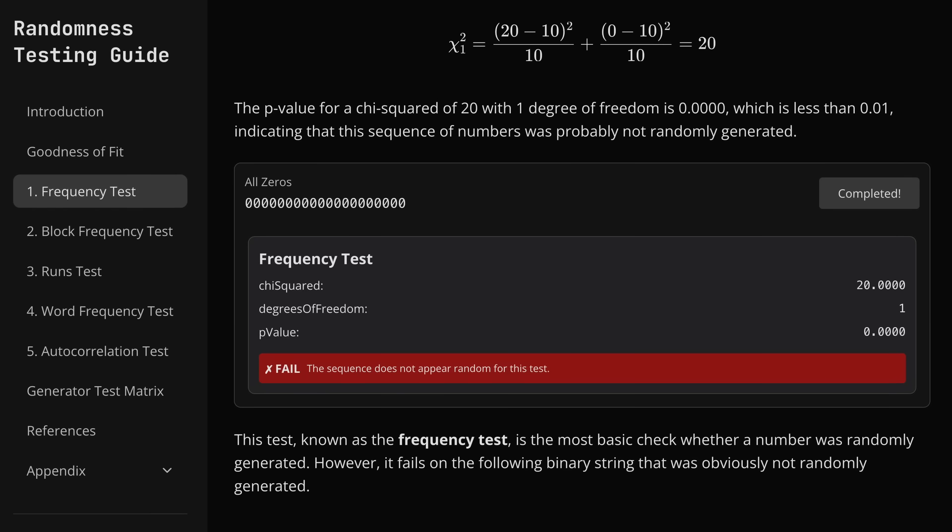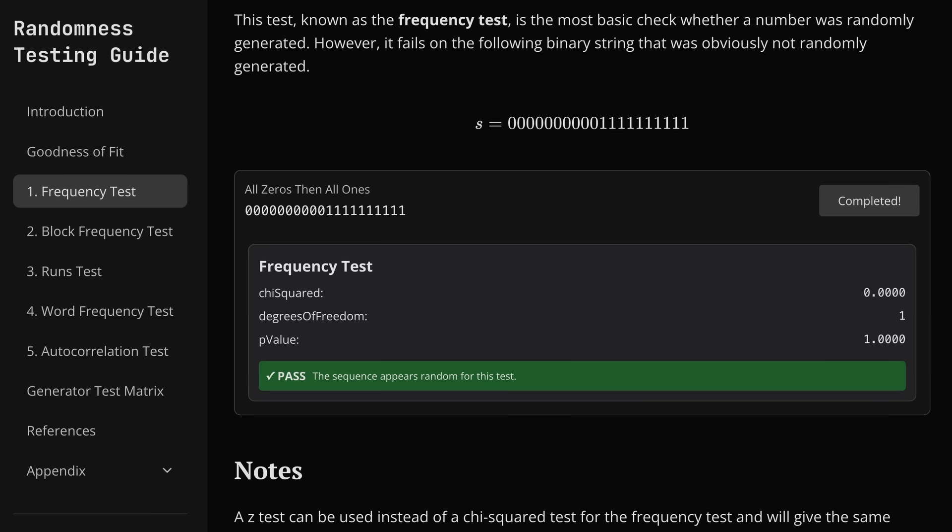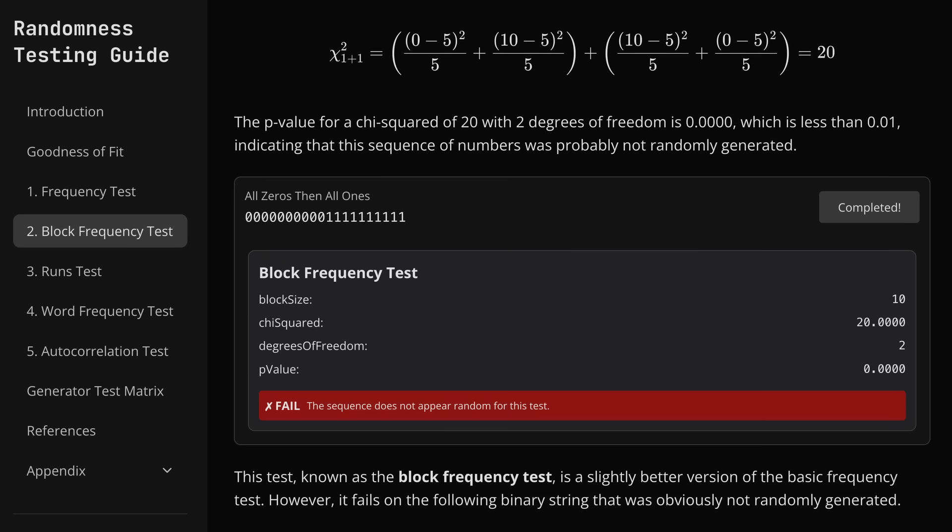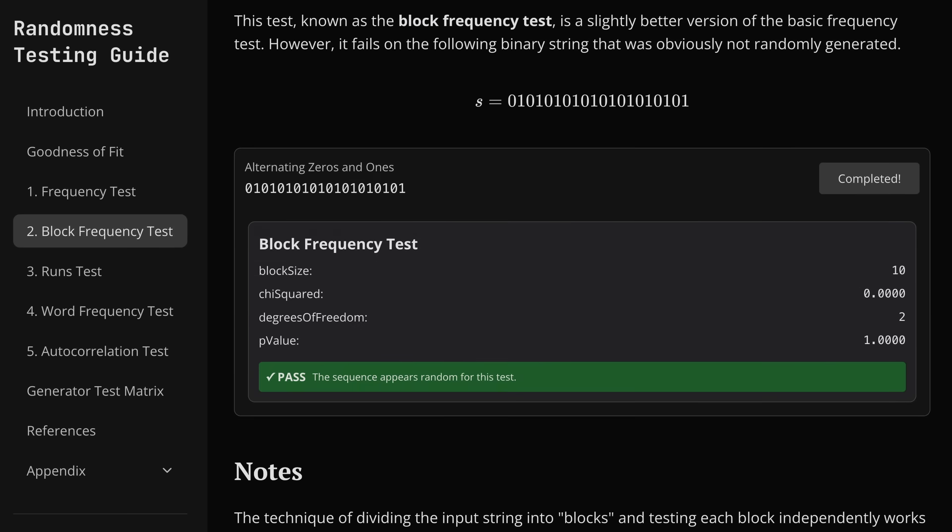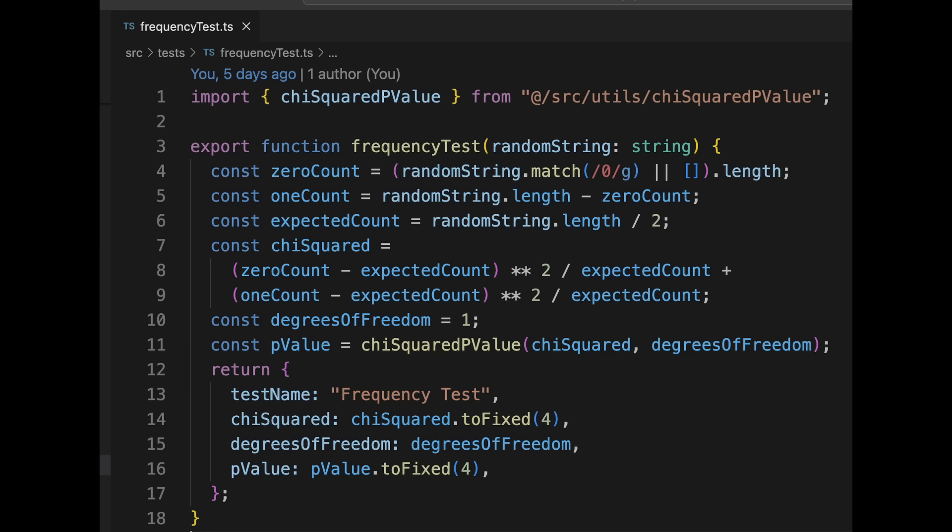But to defeat the frequency test, we can use a string of all zeros followed by all ones. But to defeat that string, we can use the block frequency test. And the back and forth continues. The cool part is that all the tests have been re-implemented in the browser with JavaScript, so you can actually play around and come up with your own test cases to see if they trick the tests.